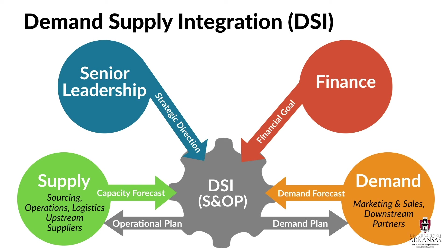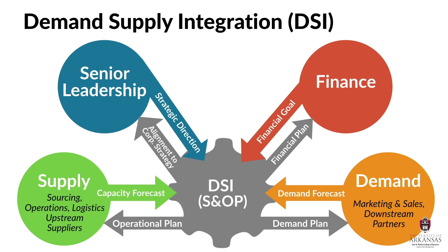Additional supply requirements may require paying more for expedited raw materials, or overtime pay in factories, or the use of premium modes of transportation. However, all these requirements would be presented and agreed to in the sales and operations planning meeting. Beyond having balanced demand and supply plans, the sales and operations planning meeting produces a financial plan that's aligned with corporate strategy. Consensus is gained through this process, and everyone should be marching to the beat of the same drum.